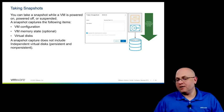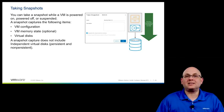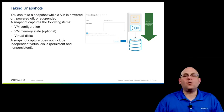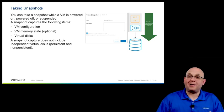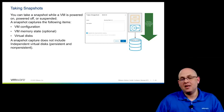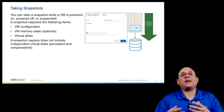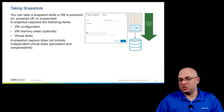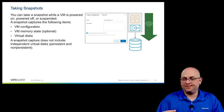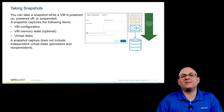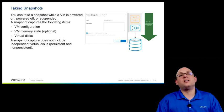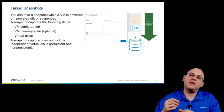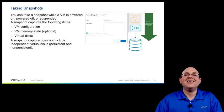You can right-click on a virtual machine and take a snapshot, and that snapshot can be taken while the virtual machine is powered on or powered off. What we are capturing in terms of the state of the virtual machine are three different things. The first is the virtual machine's configuration — the configuration of the virtual disks, the memory, the number of CPUs, and so on.